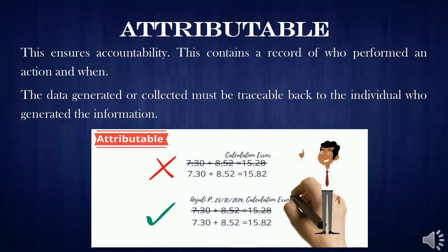First we will see Attributable. Attributable ensures accountability — it contains a record of who performed the action and when it was performed. The data generated or collected must be traceable back to the individual who generated the information. In the green tick example, you can backtrace the person who performed the calculation, the date on which it was performed, and what the previous entry was.